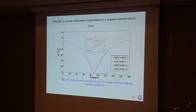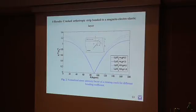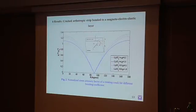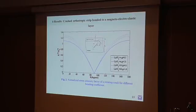We examine two cases: the perfect bonding case where k equals infinity, and the imperfect case where k equals zero. At theta equals zero, the maximum traction on the crack produces the maximum stress intensity factor. For theta equals pi over two, the traction on the crack equals zero, so the stress intensity factor goes to zero. A similar trend is observed as theta increases from pi over two.